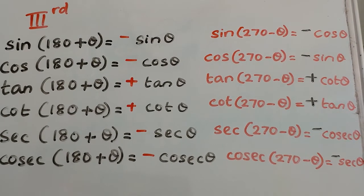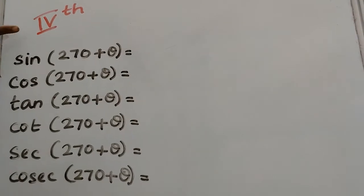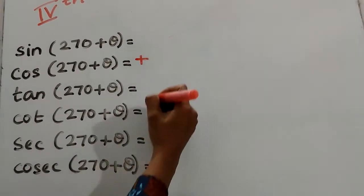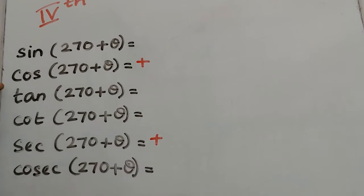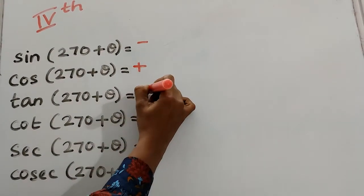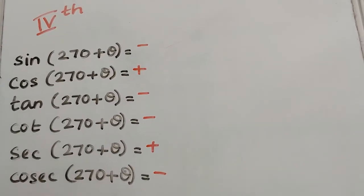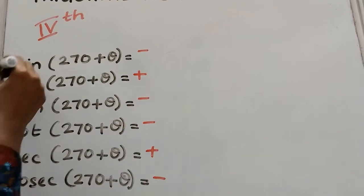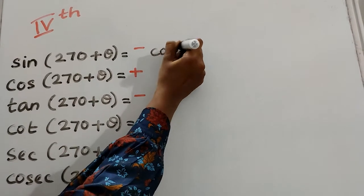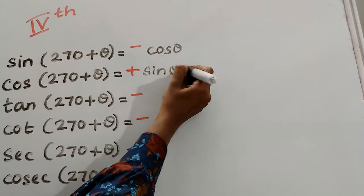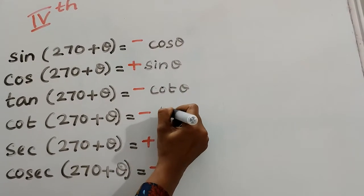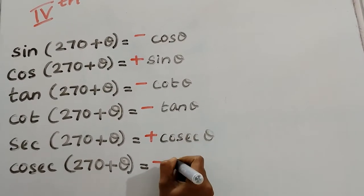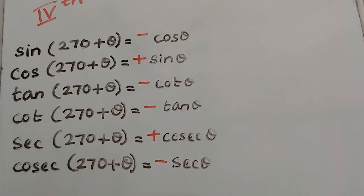Moving to the fourth quadrant. In the fourth quadrant, only cos and sec are positive. So cos is positive and sec is also positive; remaining all are negative. 270 is an odd multiple of 90, so we must change the trigonometric ratios: sine changes to cos, cos changes to sin, tan changes to cot, cot changes to tan, sec changes to cosec, cosec changes to sec.